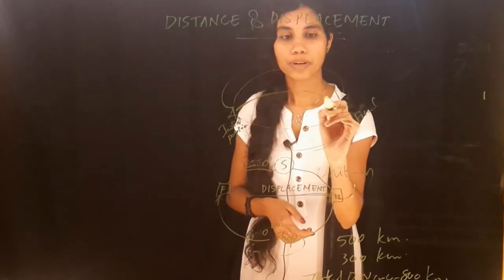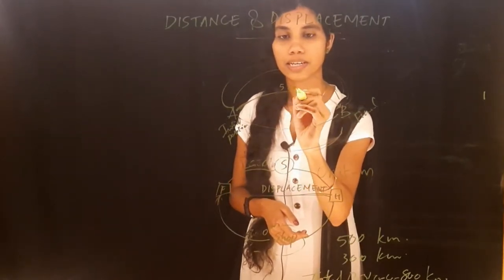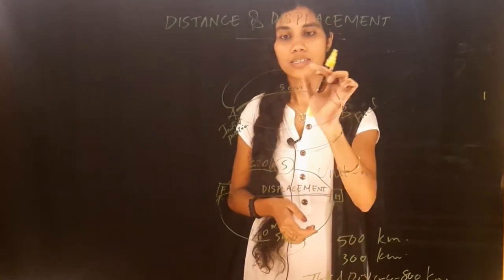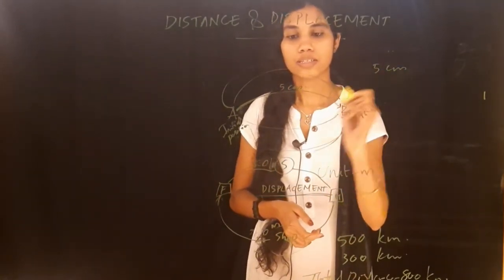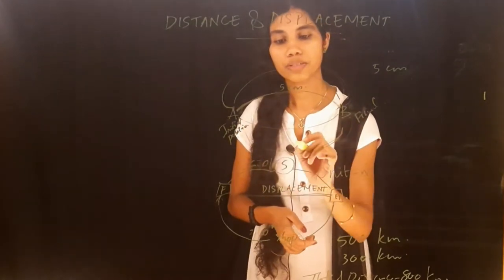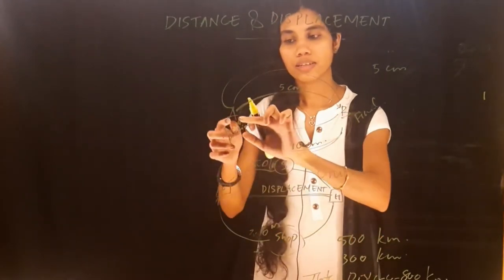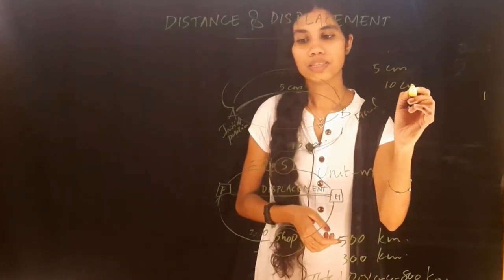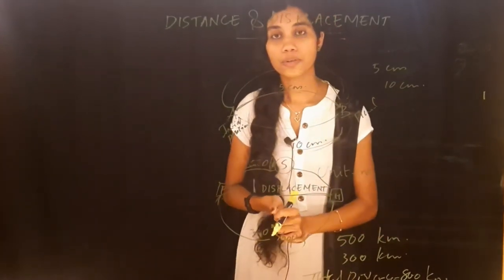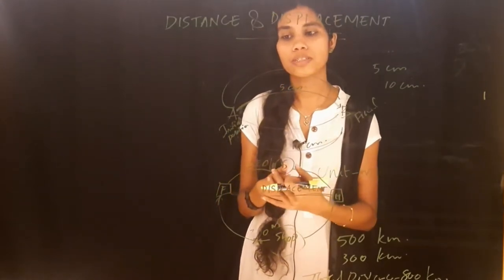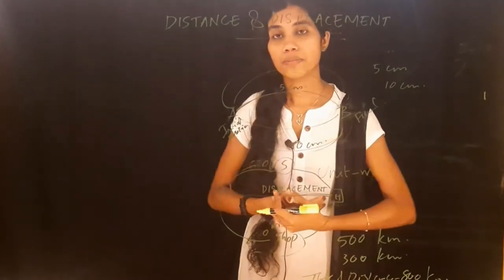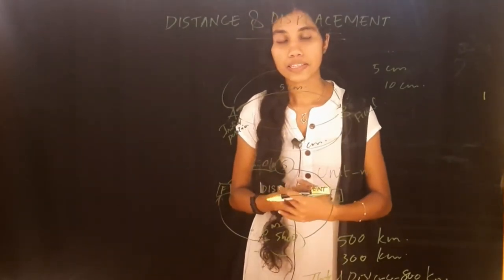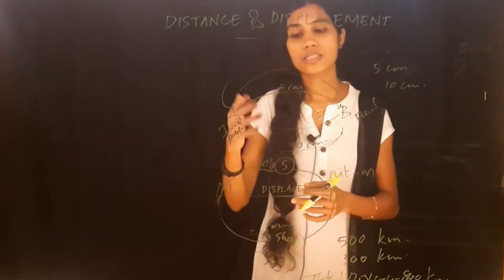This is a path. 5 cm. If you measure the distance of your body along the path, it would be 5 centimeters or 10 centimeters. The distance is very simple — the length of the path traveled is the distance.